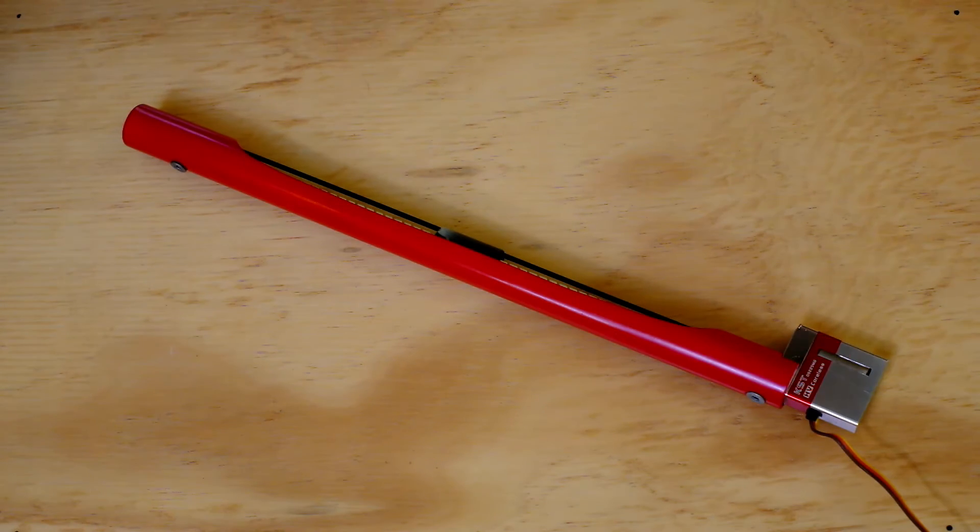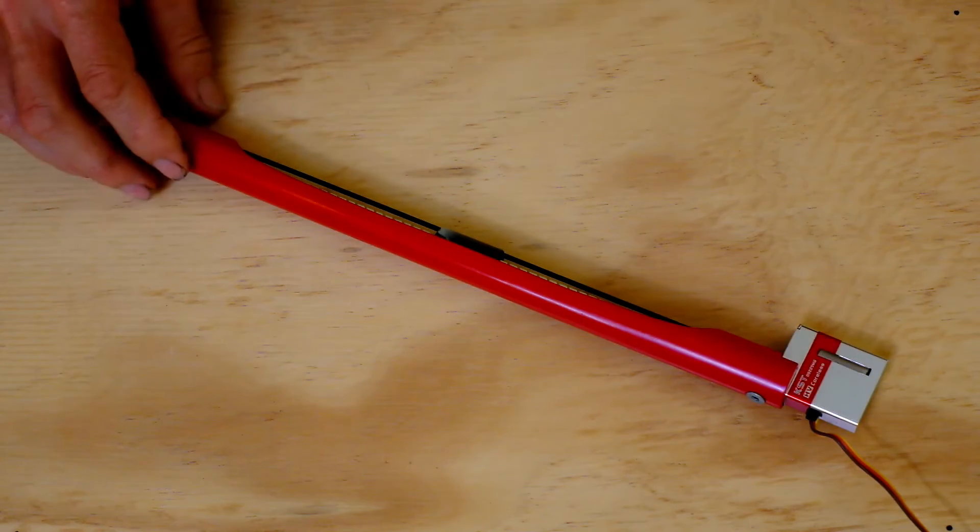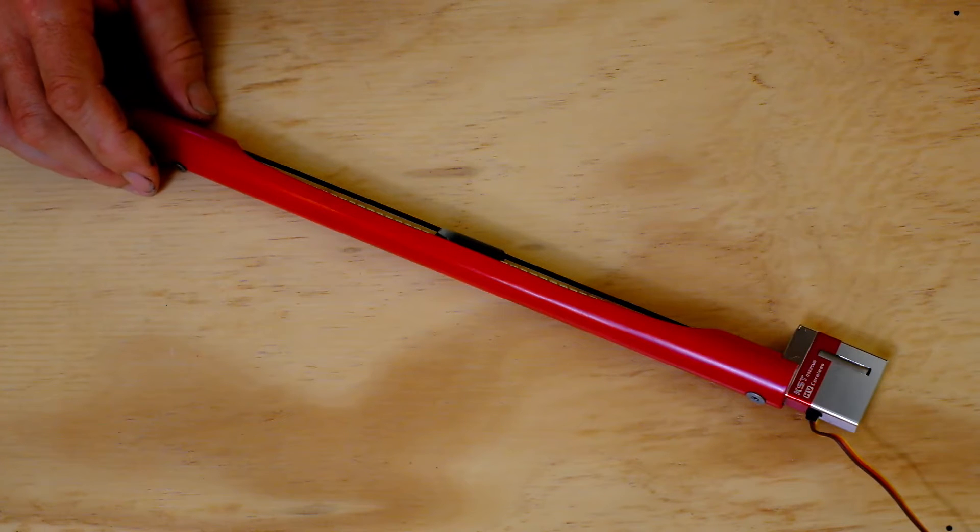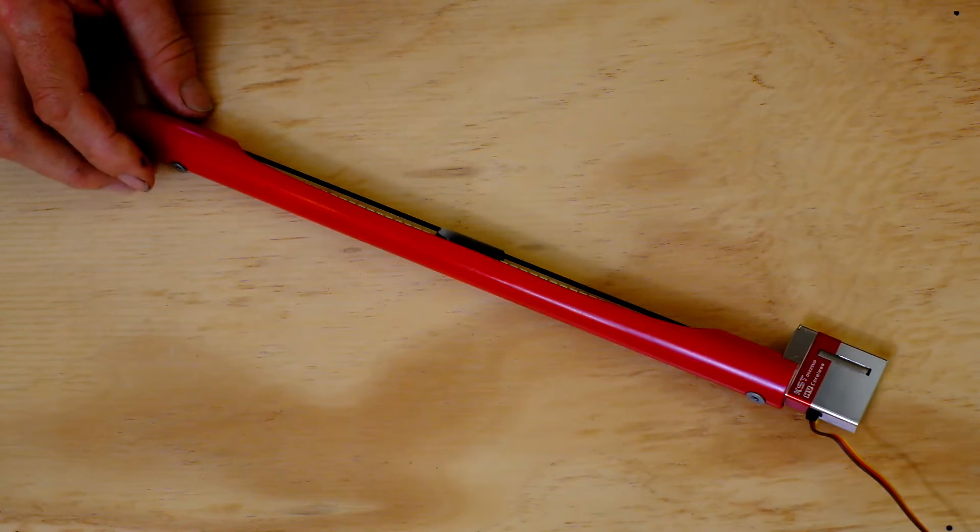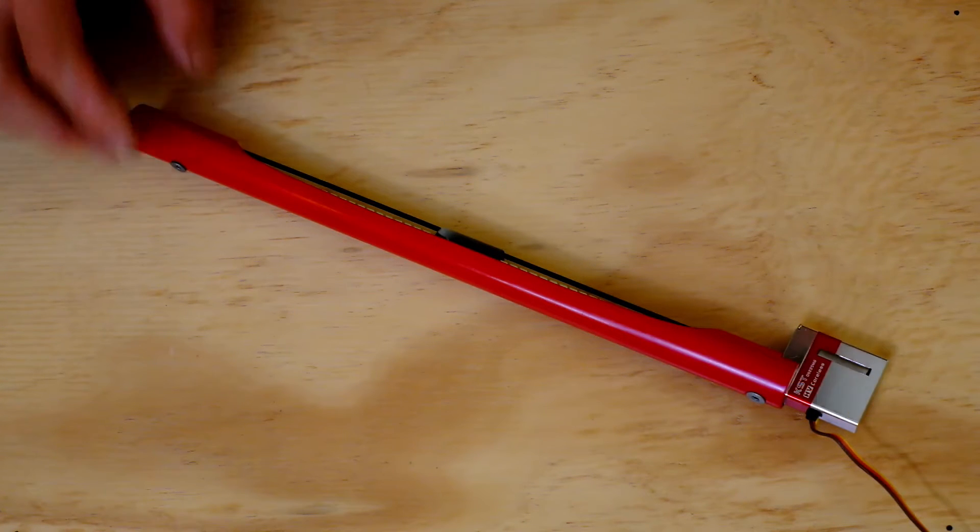OK, so this is just a short video showing you the operation of a device that I created to adjust the center of gravity for model gliders, specifically this model is for the Maxa or Supra model from Vladimir's models.